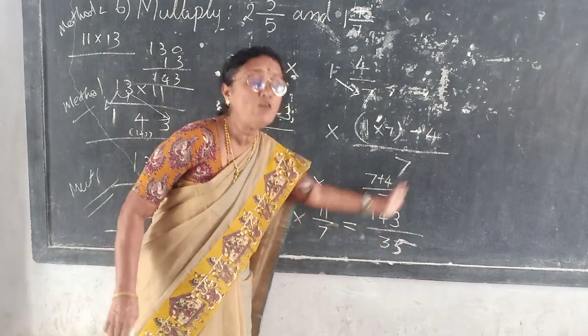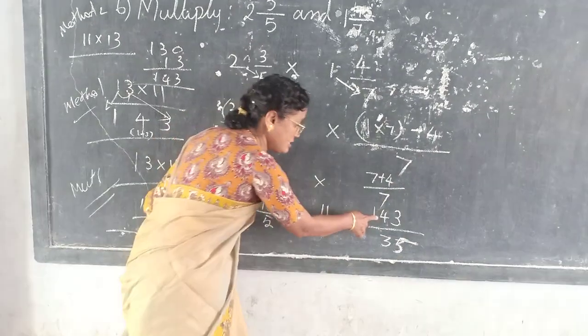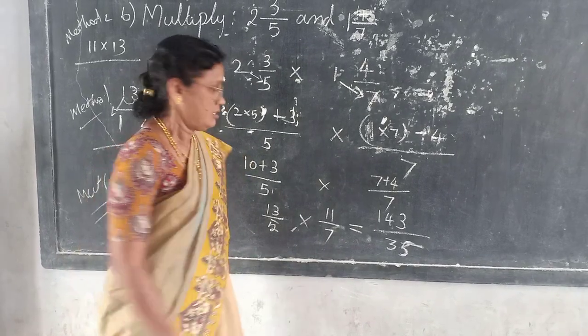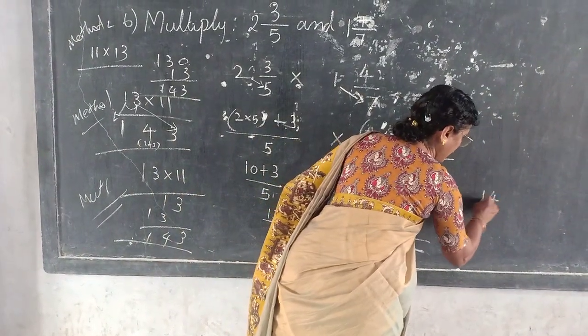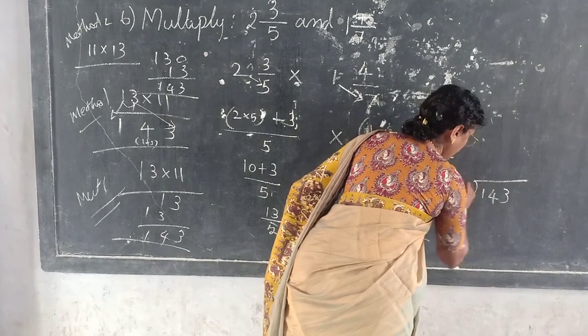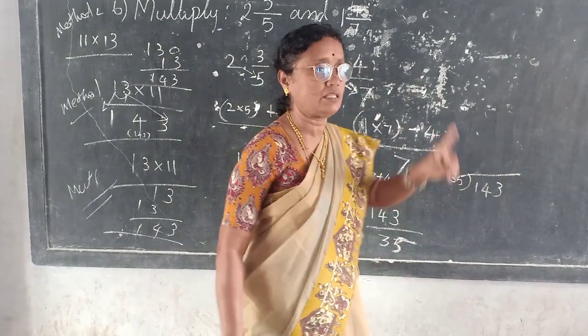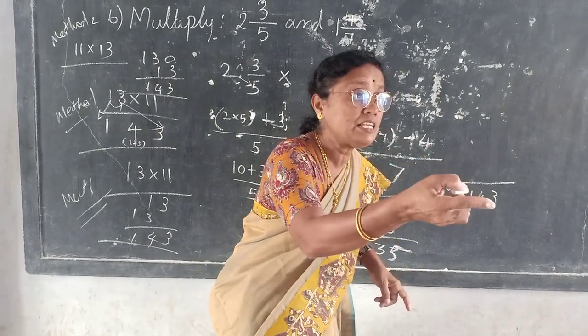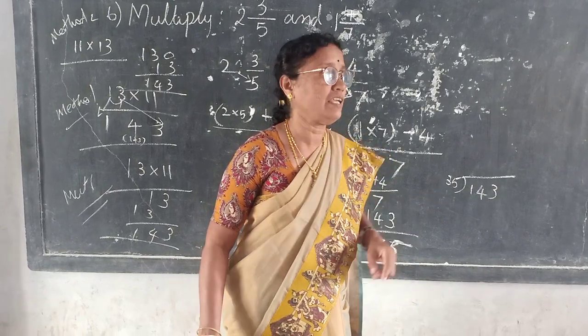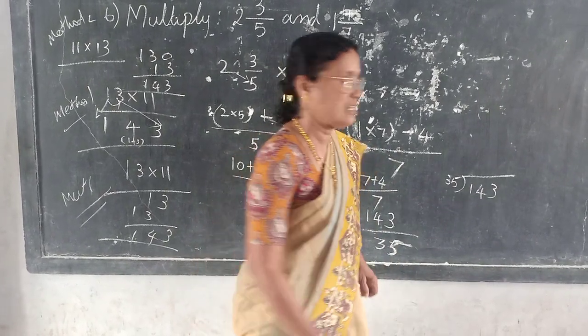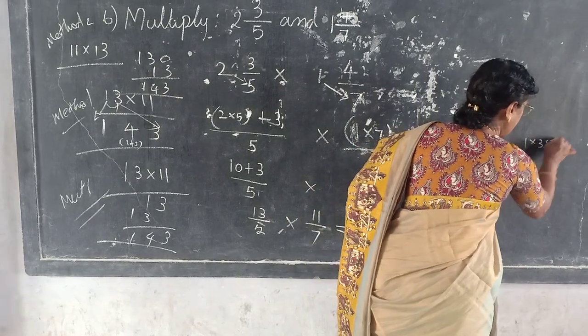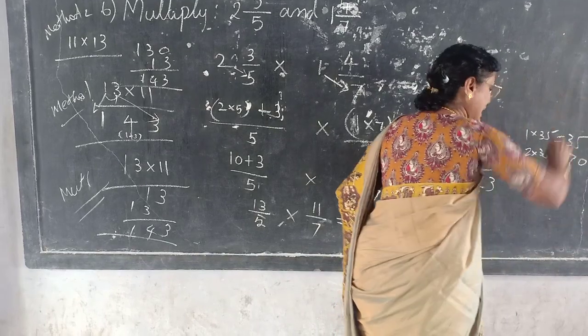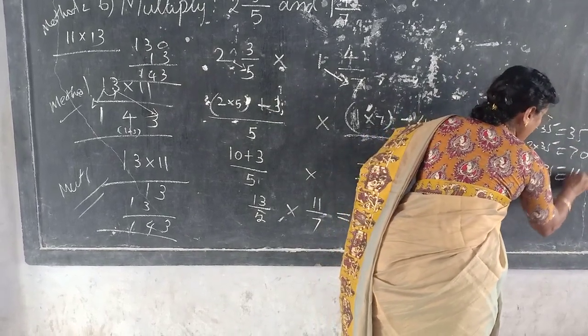Don't stop here. You have to convert this into mixed number because this is improper fraction. So 143 divided by 35. How many 35's are there? 1 times 35 is 35. 2 times 35 are 70. 4 times 35 are 140.